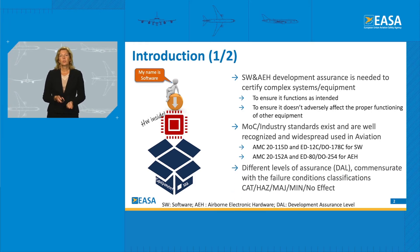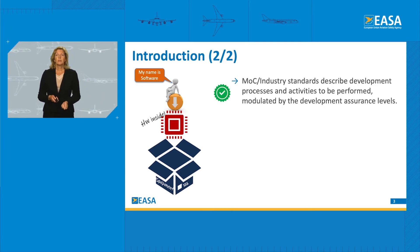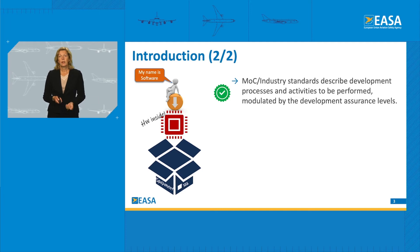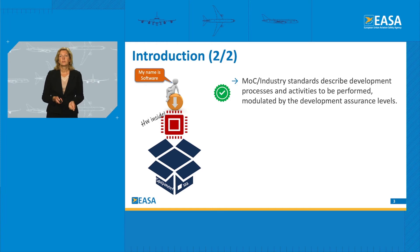From the safety assessment, we have the failure condition classifications that are evaluated, and the output of this safety assessment defines the different levels of assurance — what we call development assurance level, DAL — commensurate with those failure condition classifications. Our means of compliance and industry standards describe processes and activities to be performed, and they are modulated by these development assurance levels. The applicant is invited, when choosing those industry standards, to develop these development processes in relation with these standard activities.